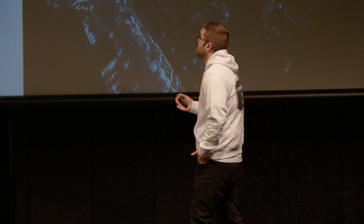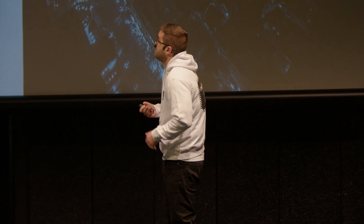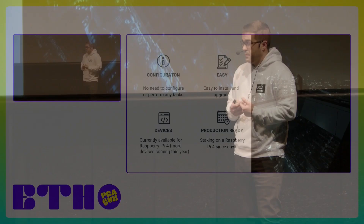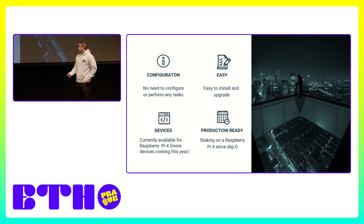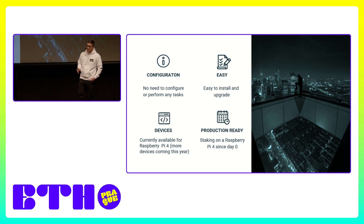It also has to be easy. The installation is the easiest installation you could imagine — you only need to write one image to an SD card. And the upgrade is also easy, because we provide an APT repository. You only need to update the whole system, and new versions of the Ethereum client packages will be available and will automatically update and restart. We have to support as many devices as we can. Right now we have the image available for the Raspberry Pi 4, and this year probably one or two more devices are coming.